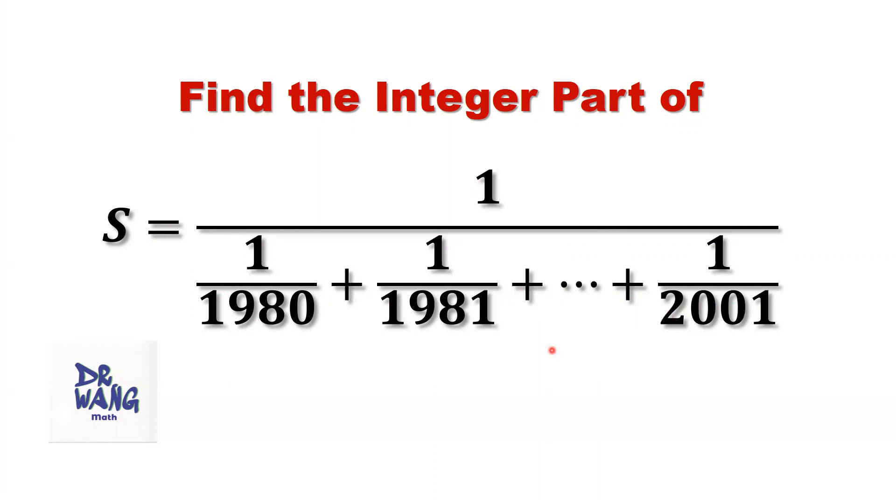In general, a real number has two parts, the integer part and the decimal part. To find the integer part of S is not as difficult as you think.